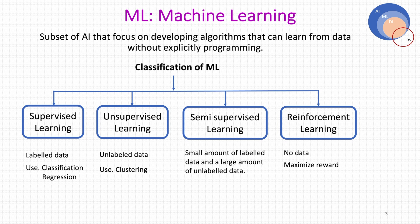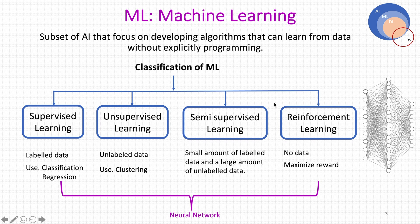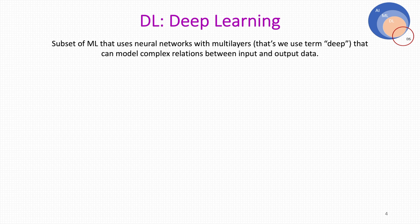If we look at the underlying concept behind machine learning, neural networks are the base class. There are many different machine learning algorithms like random forest, SVM, and linear regression, but neural networks are the most successful and popular. In machine learning, a neural network has one input layer, one or two hidden layers, and an output layer.